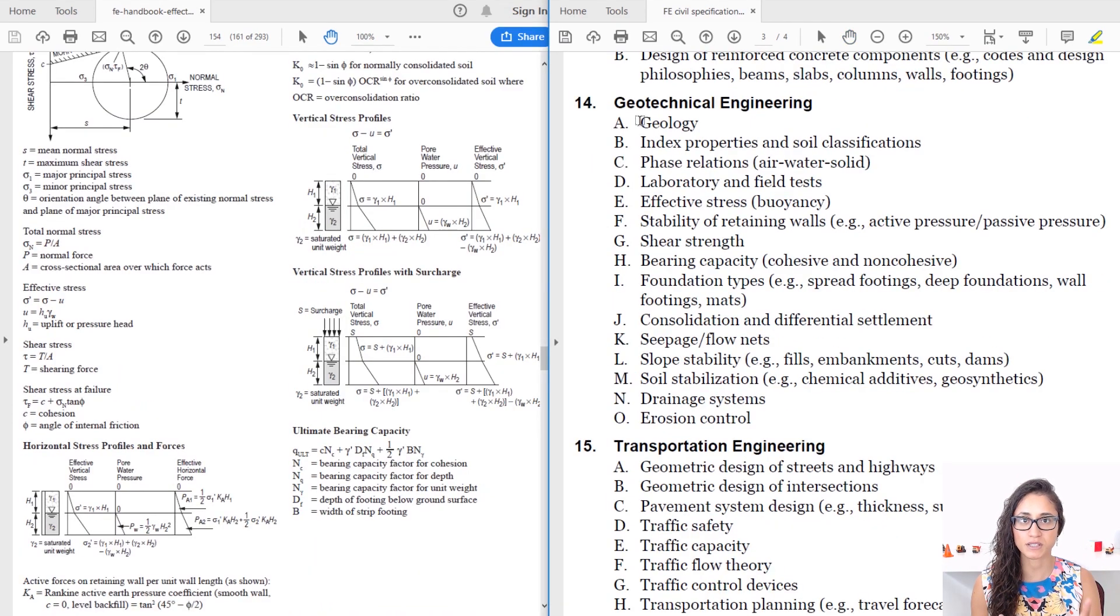Okay guys, so if we look at the specifications here there are a couple topics that you will most likely not get during your exam so let's highlight them. So we have geology, we have laboratory and field tests, we have slope stability, we have soil stabilization, drainage system and erosion control. So these topics you will most likely get them on your PE than the FE exam and I wouldn't totally skip them. I would recommend that you guys just go over them briefly just in case you might get something during the test. I didn't get anything on this on the test and I don't want you to waste too much time on it where you could actually be spending that time on questions that you most likely will get during the test.